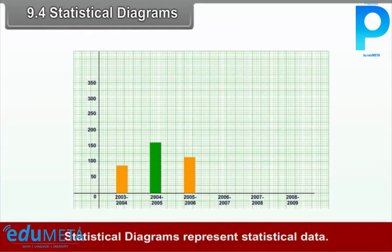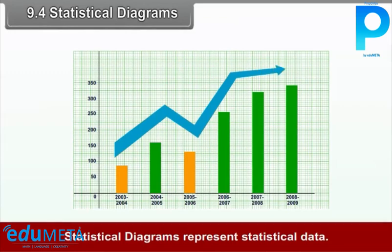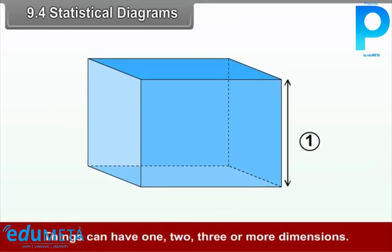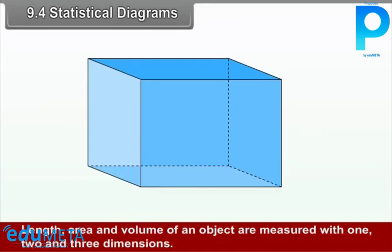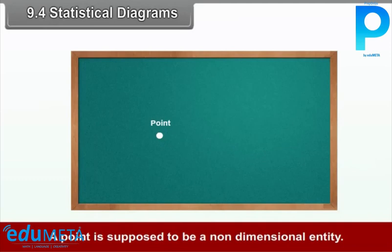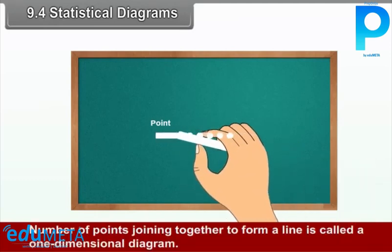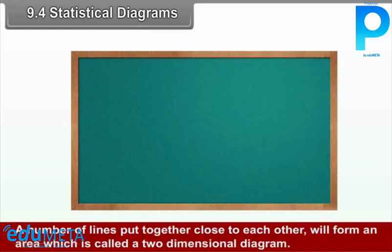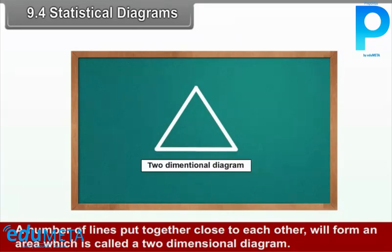9.4 Statistical Diagrams. Statistical diagrams represent statistical data. Everything that exists has some dimension — things can have one, two, three, or more dimensions. Length, area, and volume of an object are measured with one, two, and three dimensions respectively. A point is a non-dimensional entity. A number of points joining together to form a line is called a one-dimensional diagram. A number of lines put together to form an area is called a two-dimensional diagram.